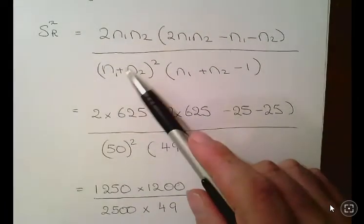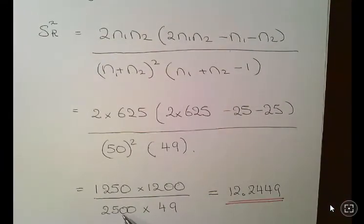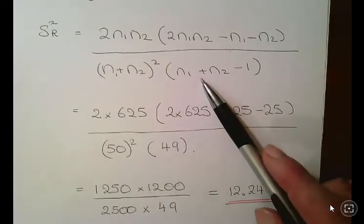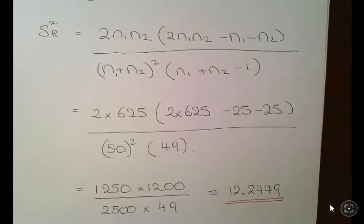N1 plus N2 squared is 25 plus 25 squared which is 2500, and N1 plus N2 minus 1 is basically 50 divided by 50 minus 1 which is 49.